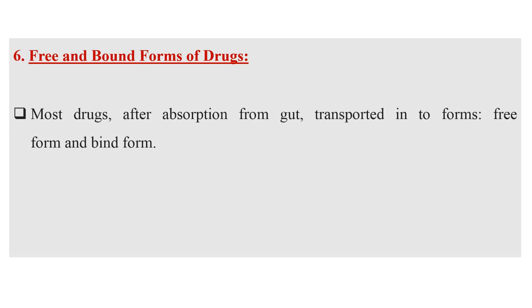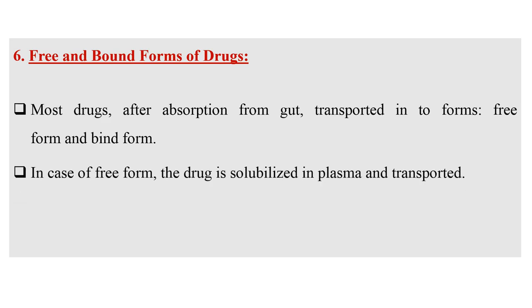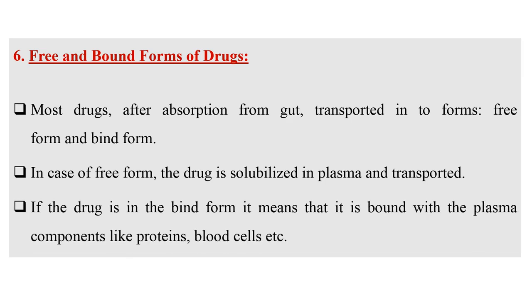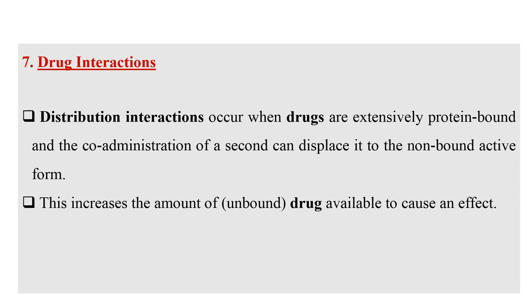The next factor is the free and bound form of a drug. Most drugs after absorption from the gut are transported in both free and bound form. In the free form, the drug is solubilized in the plasma and transported. In the bound form, it is bound with plasma components like proteins and blood cells. Distribution interactions occur when drugs are extensively plasma-bound and co-administration of a second drug can displace it to the non-bound active form, increasing the amount of unbound drug available to cause an effect.